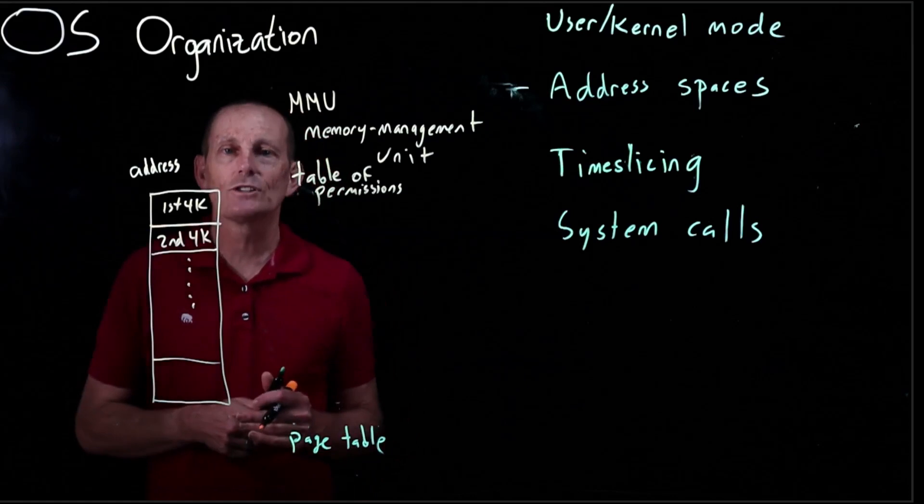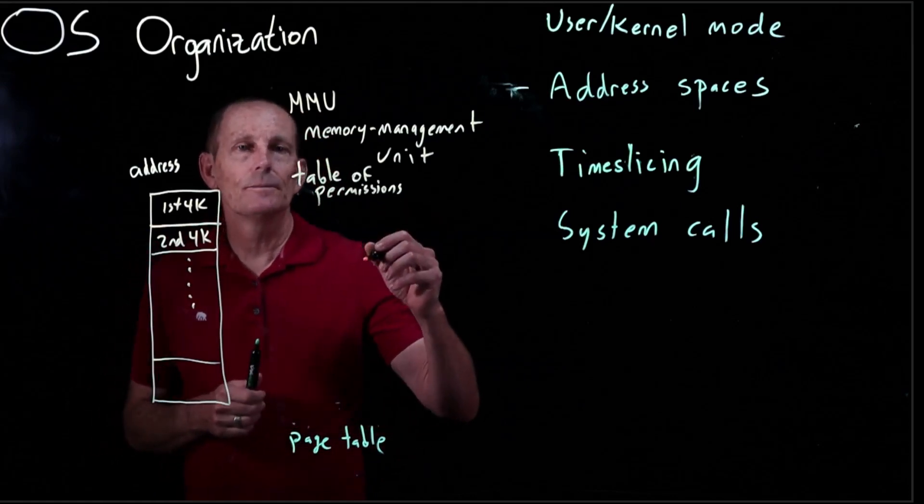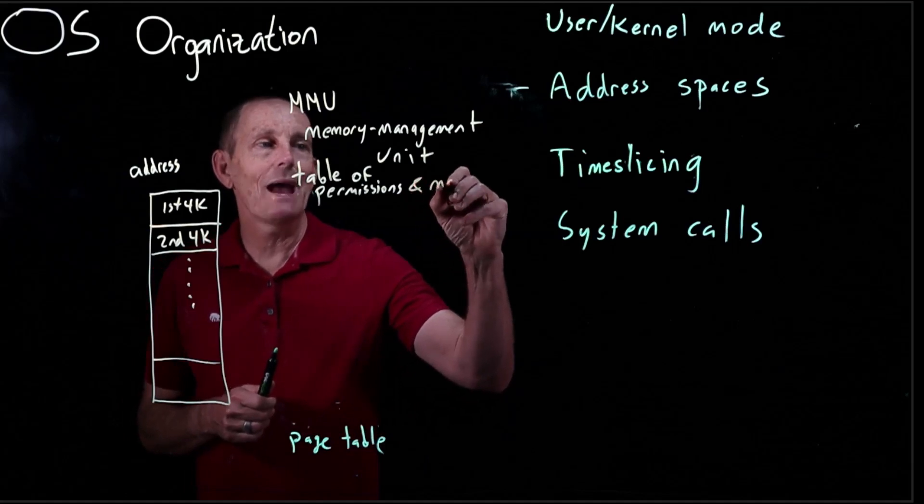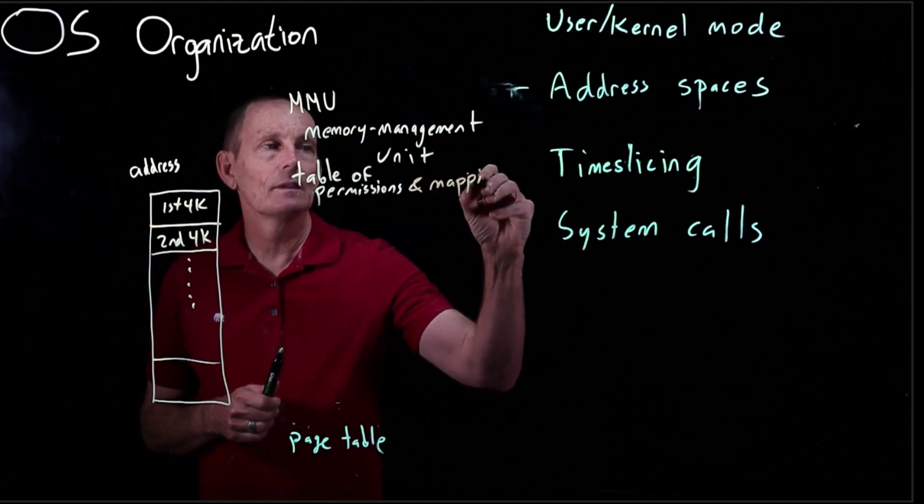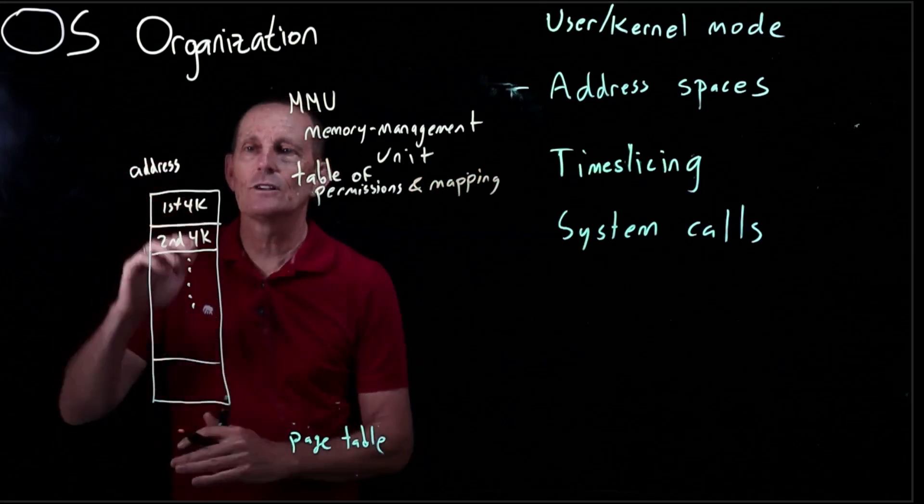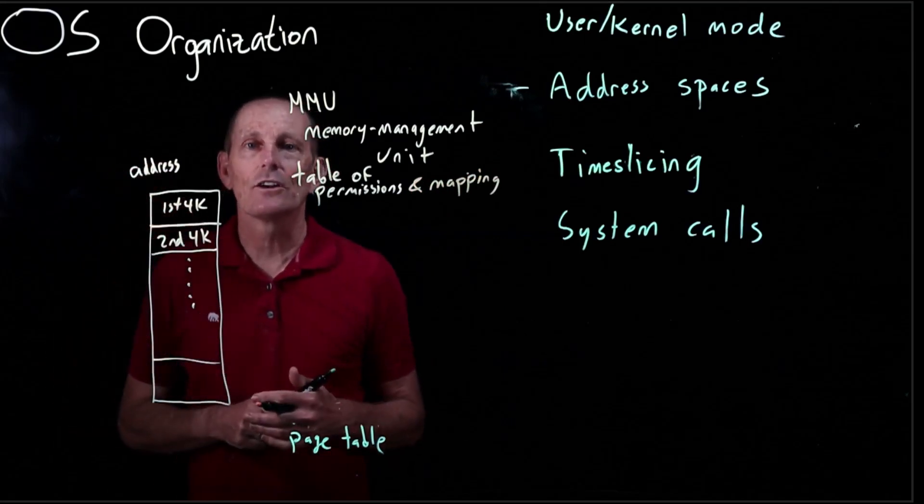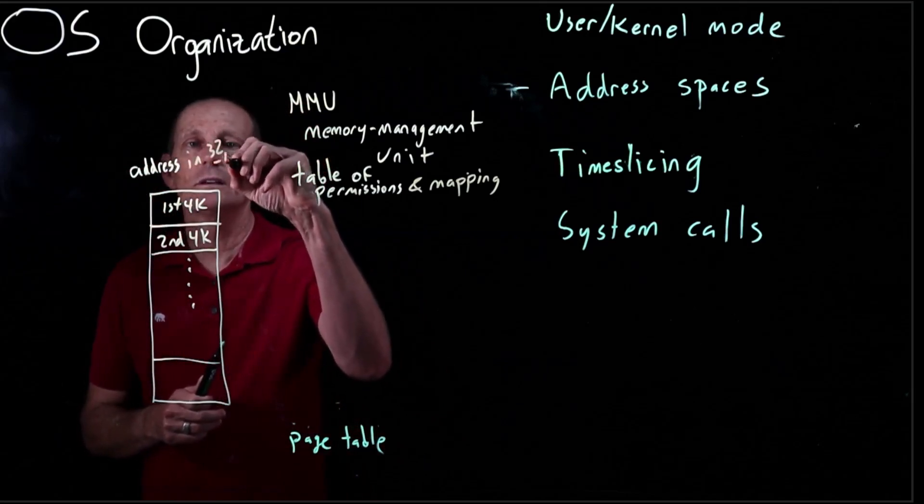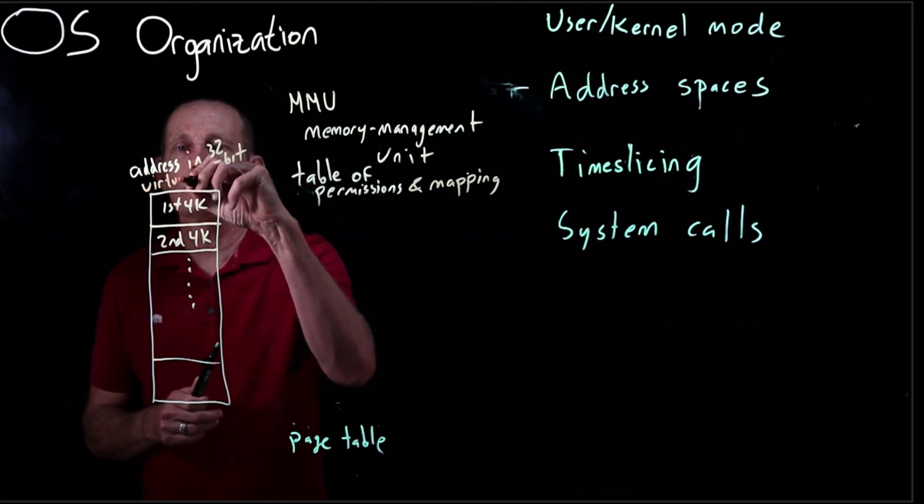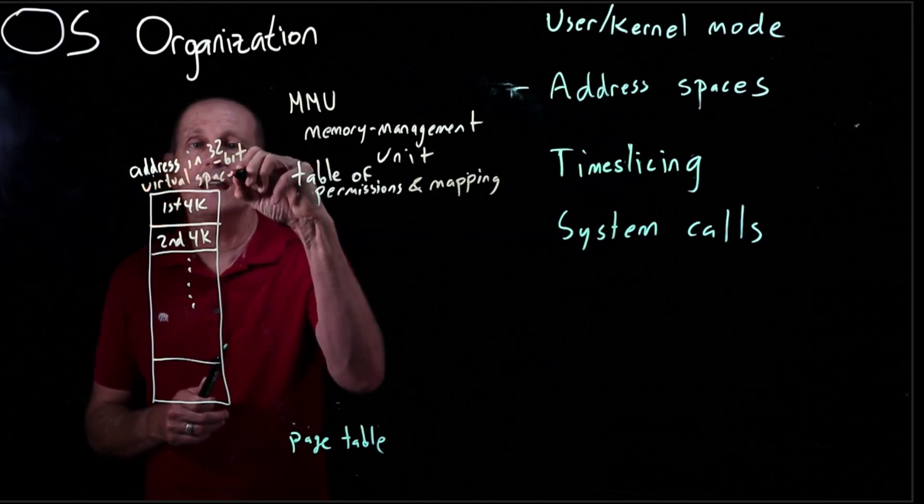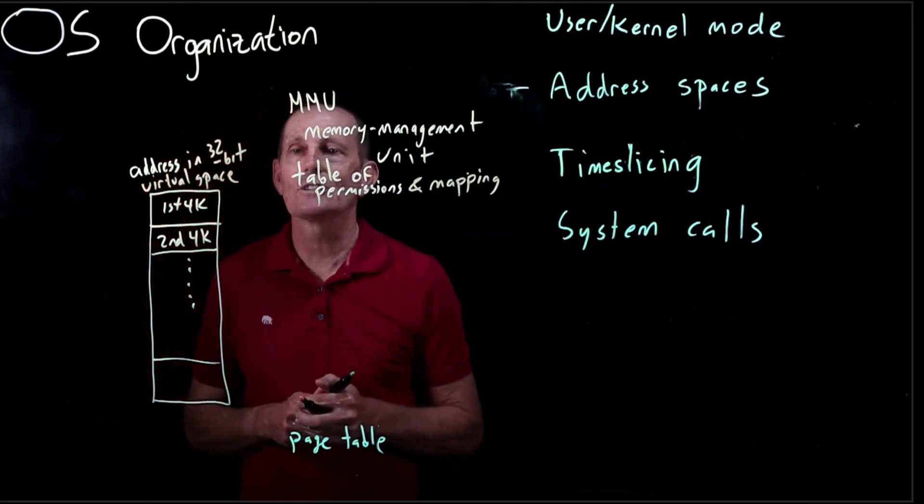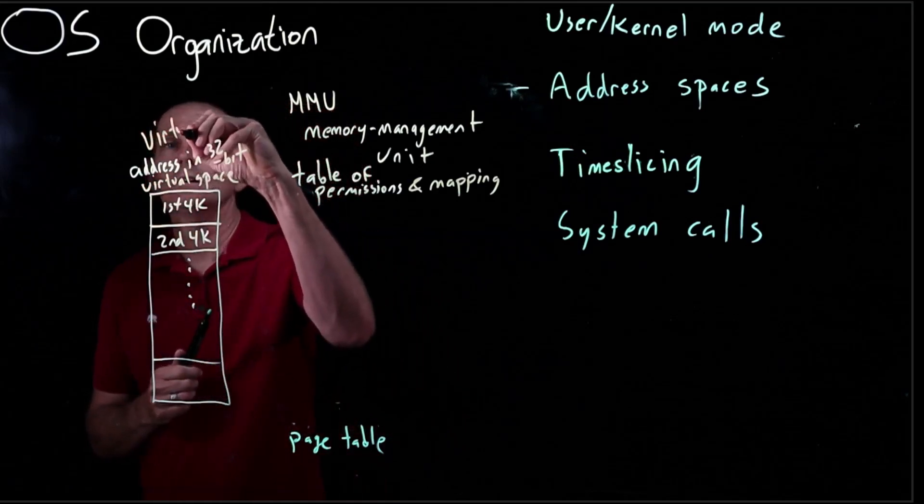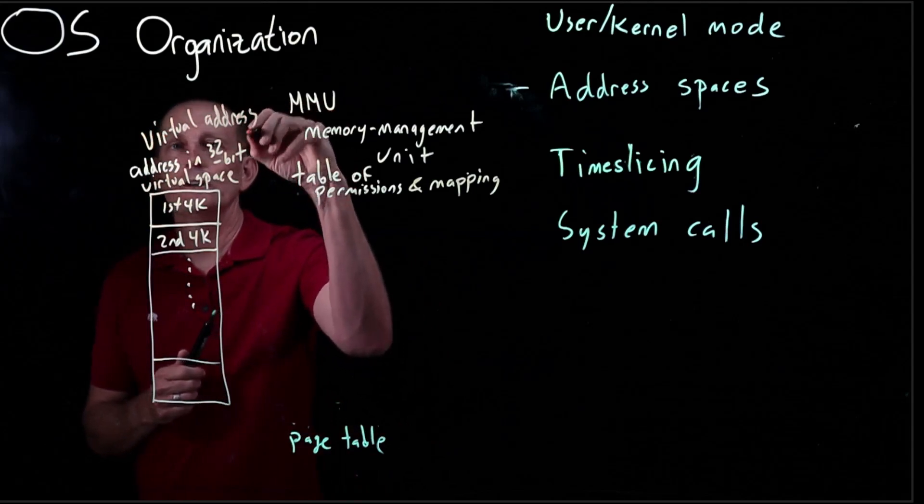Now, it's a little more complicated than that. The MMU actually has more that it can do. We have a table of permissions and mapping. So what we're going to look at is not just addresses in memory, but addresses in our 32-bit virtual space. I say virtual because, for instance, we may not have 32 bits of actual RAM.